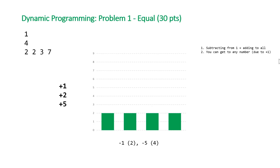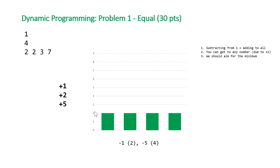The second thing to note is that you can reach any target number because we have a plus-one (or minus-one) operation available — the smallest unit of change. This means whatever target we choose, we know we can reach it. This leads to the insight that we should aim for the minimum number of chocolates in the distribution, because thinking of the problem as reducing everyone to the same number means targeting the minimum will give us the smallest number of operations needed.